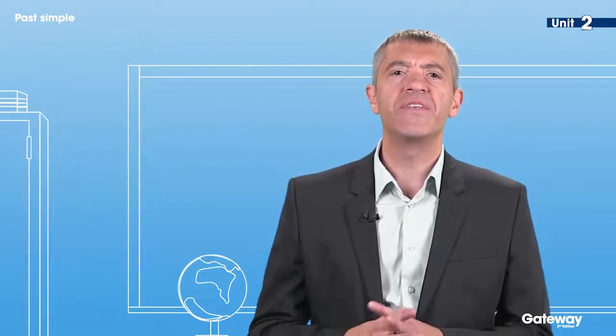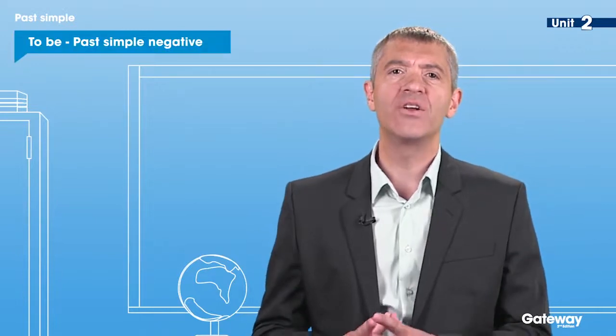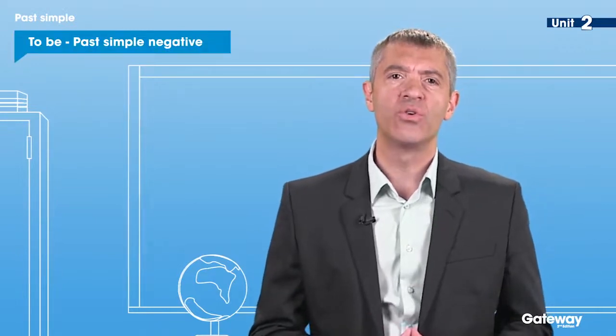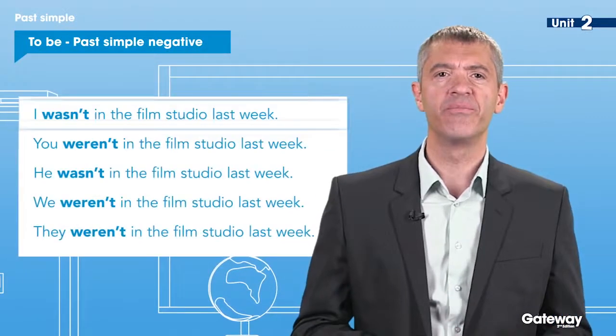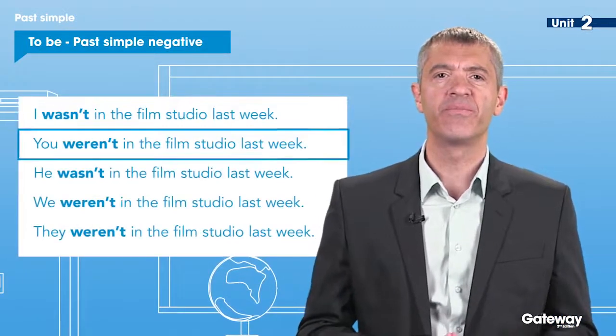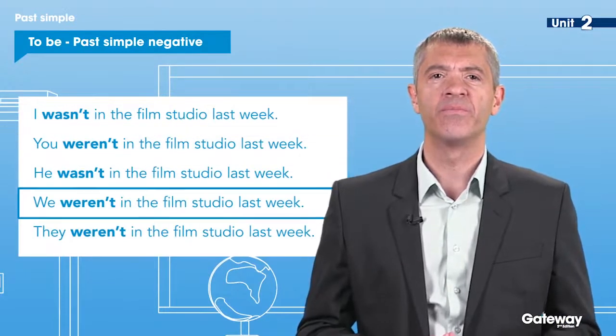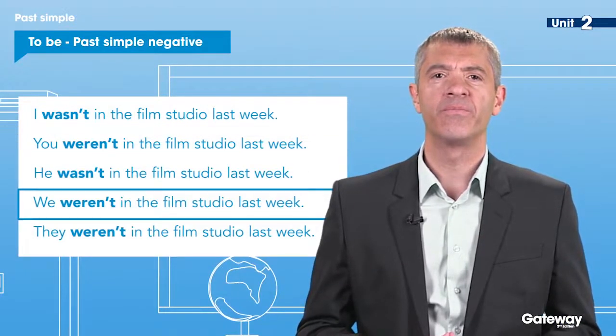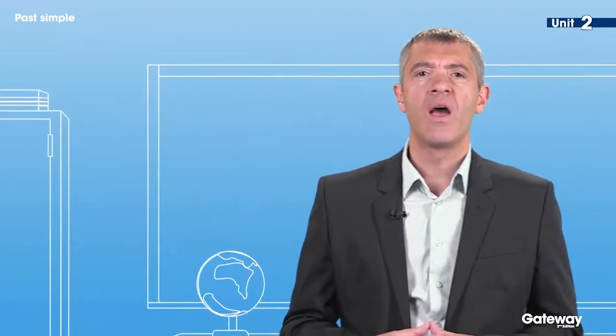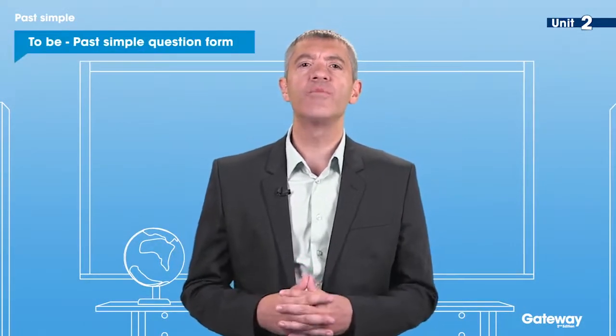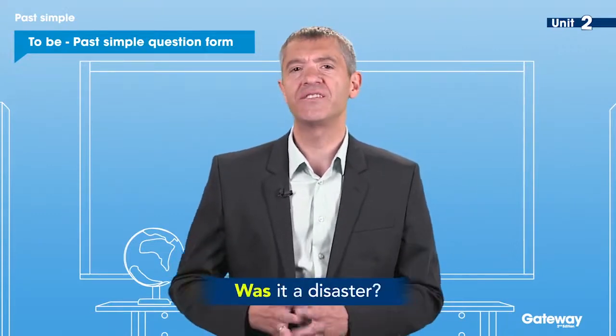To make the negative form, we add not or n't. And to make questions with was and were, we move was or were and put them before the subject. For example: was it a disaster?